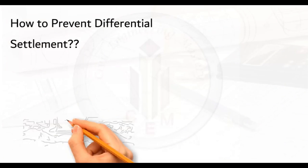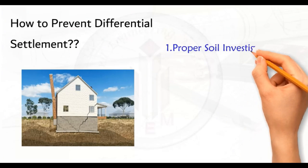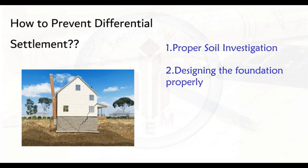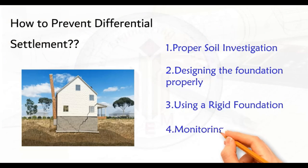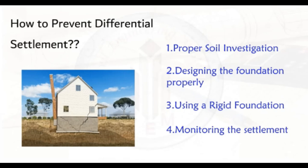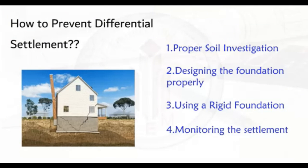Let us look at how we can prevent differential settlement. The first step is proper soil investigation — conducting a thorough soil investigation to determine the type of soil and its bearing capacity. This will help identify any potential problem that could lead to differential settlement. The next step is designing the foundation properly, so that it distributes the load of the structure evenly over the underlying soil. This will help prevent one part of the foundation from settling more than others, minimizing chances of differential settlement.